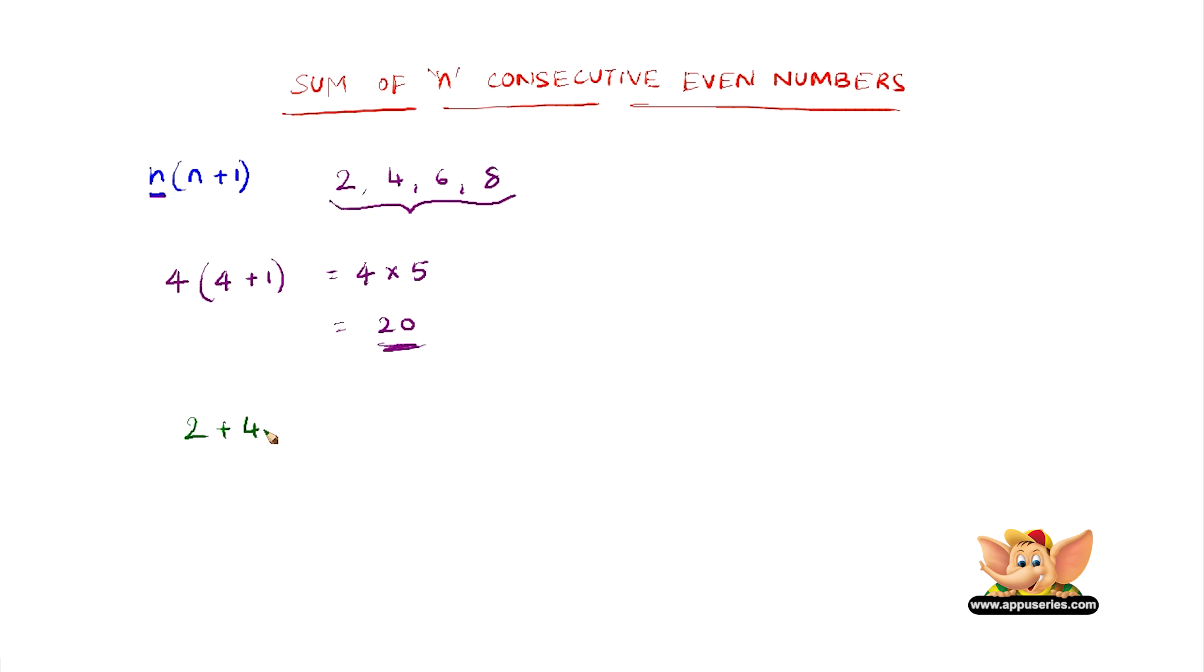2 plus 4 is 6. 6 plus 6 is 12. 12 plus 8 is 20. And this was much simpler.